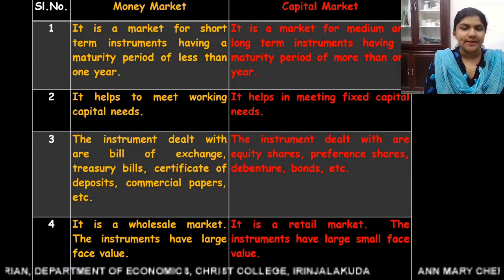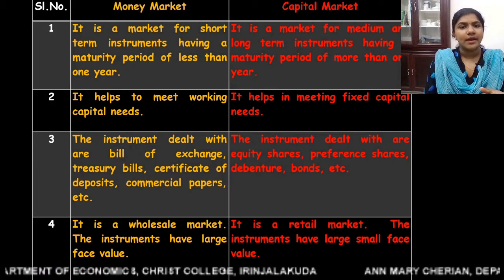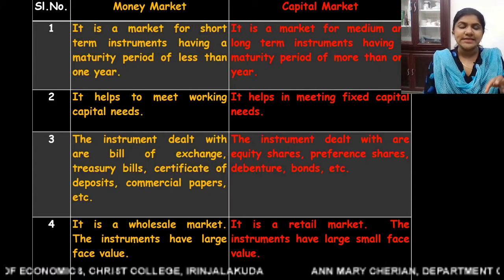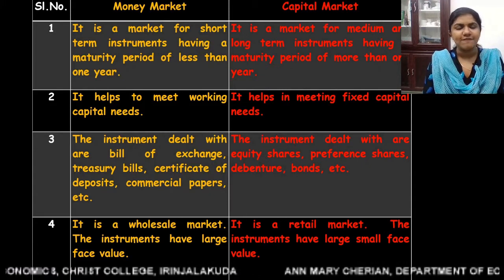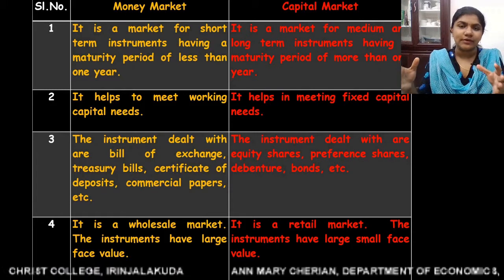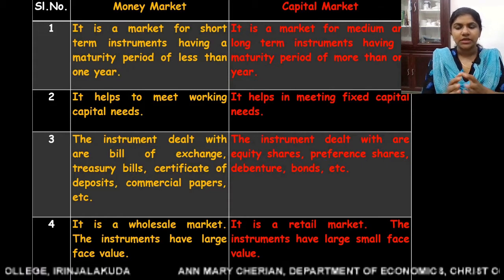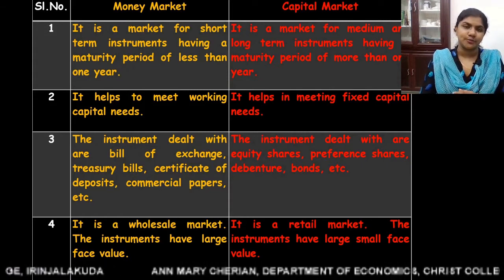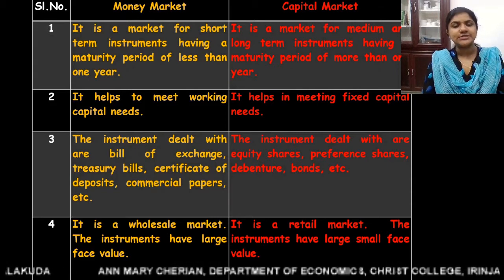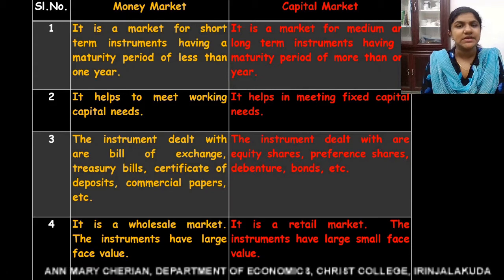The fourth difference: money market is a wholesale market, whereas capital market is a retail market. Money market is a wholesale market because instruments traded in the money market have a huge face value. Capital market is said to be a retail market because instruments bought and sold in capital markets have a small face value.